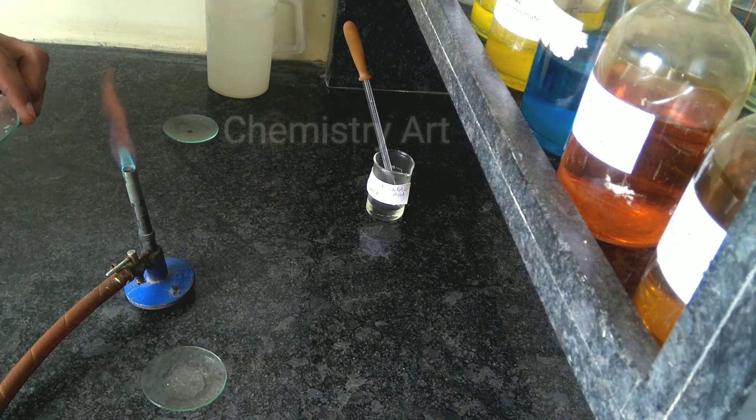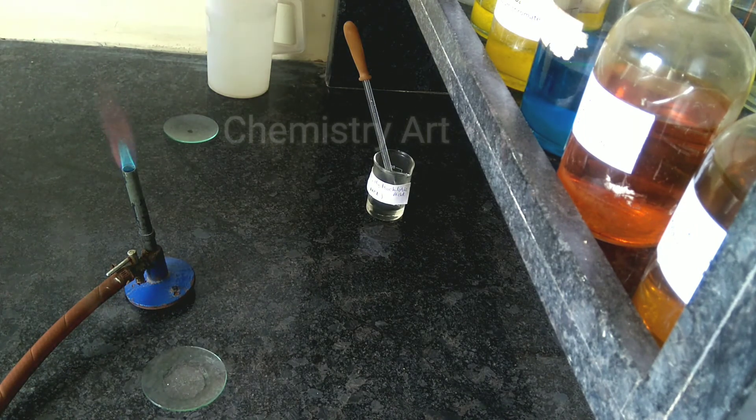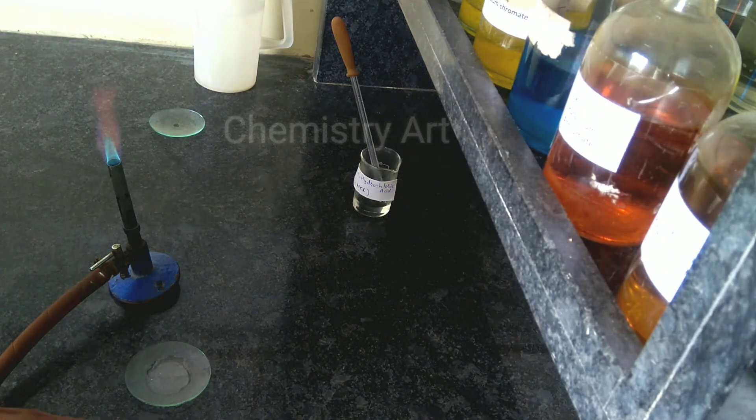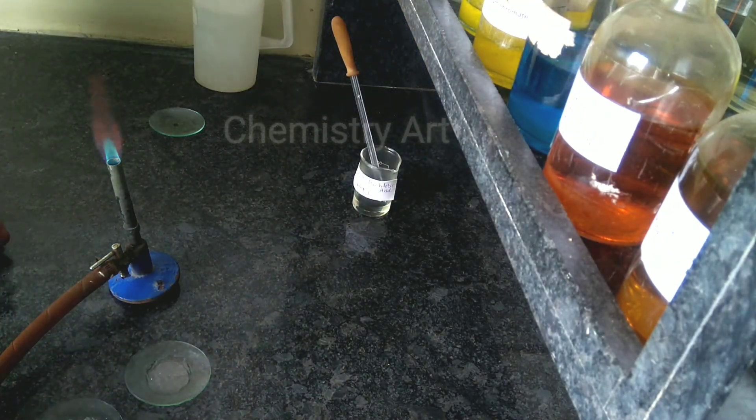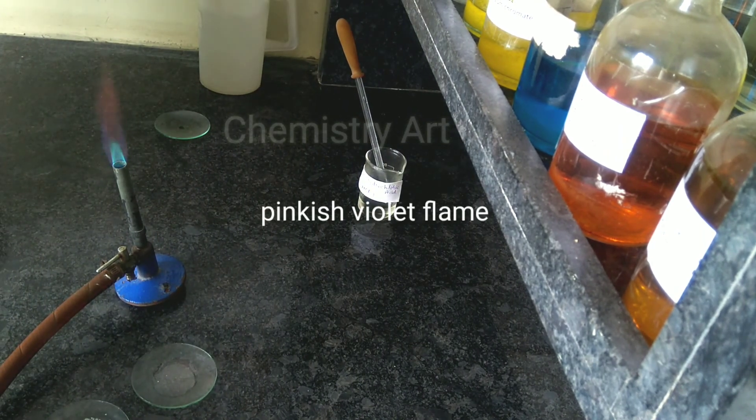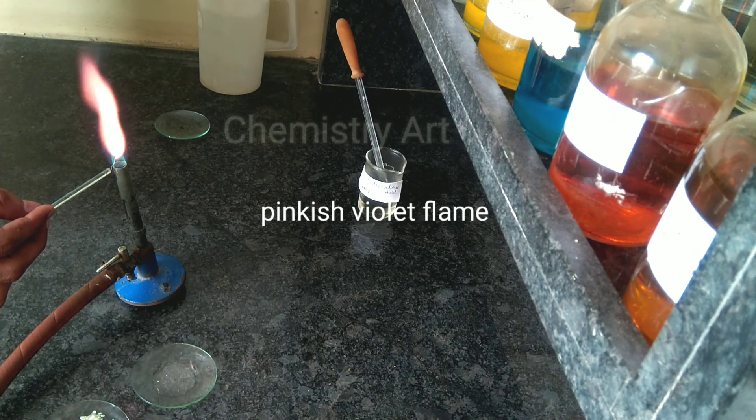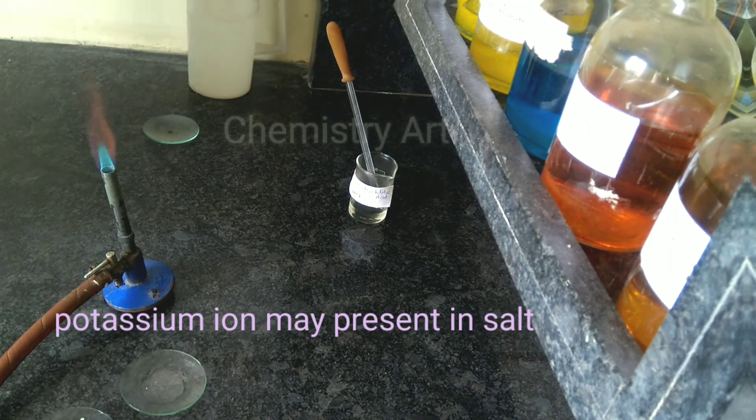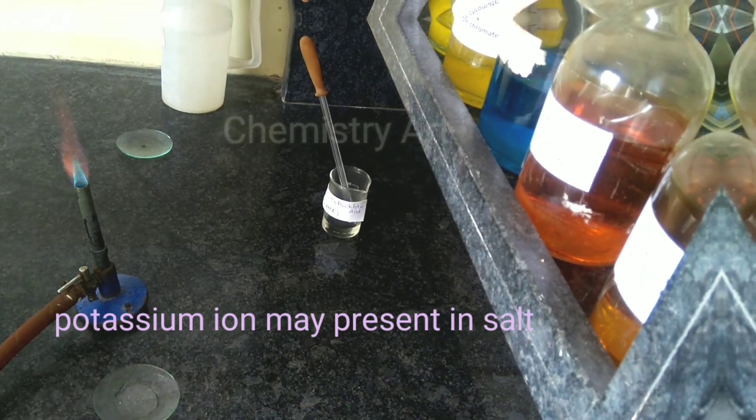This is the third salt. I have added the concentrated hydrochloric acid and the paste is ready, but before that once again you have to clean the platinum wire. Here you can see it is giving the pinkish violet color, showing that potassium ion is present in this salt.